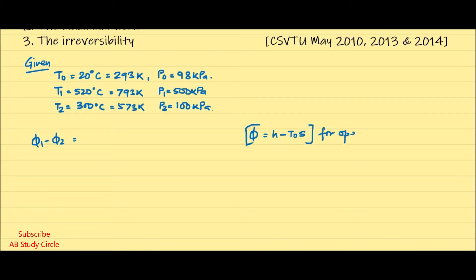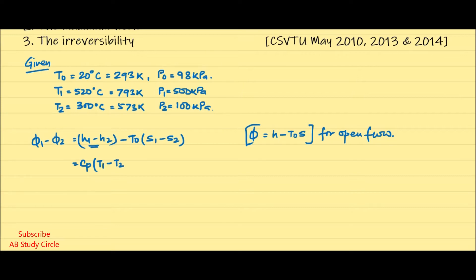The availability change for an open flow system is h minus T0·s. So φ1 minus φ2 equals (h1 minus h2) minus T0·(s1 minus s2). Since h = cp·T, this becomes cp·(T1 minus T2) minus T0·(s1 minus s2).